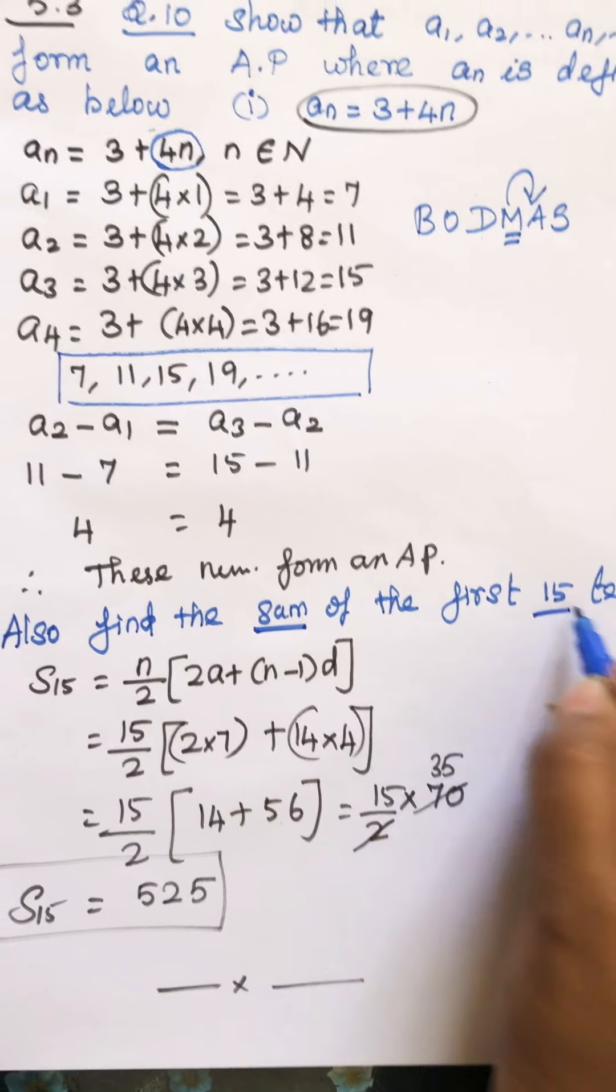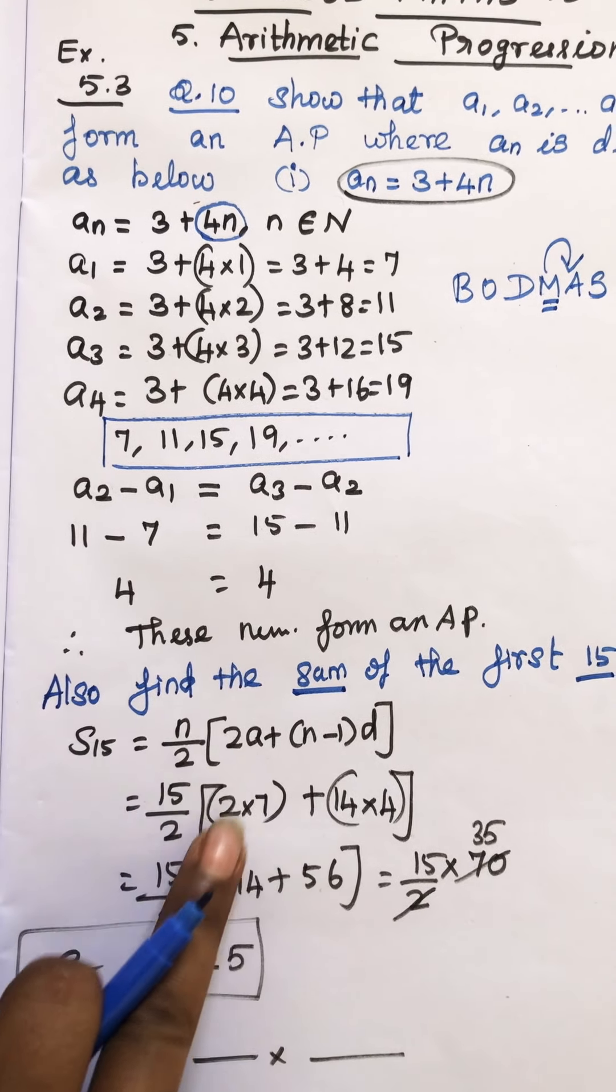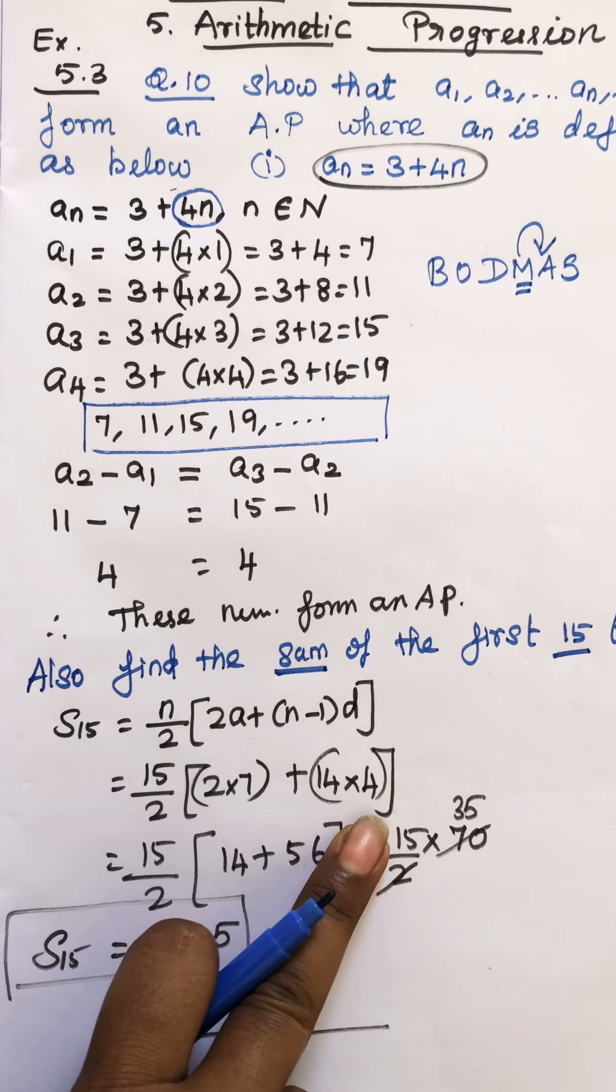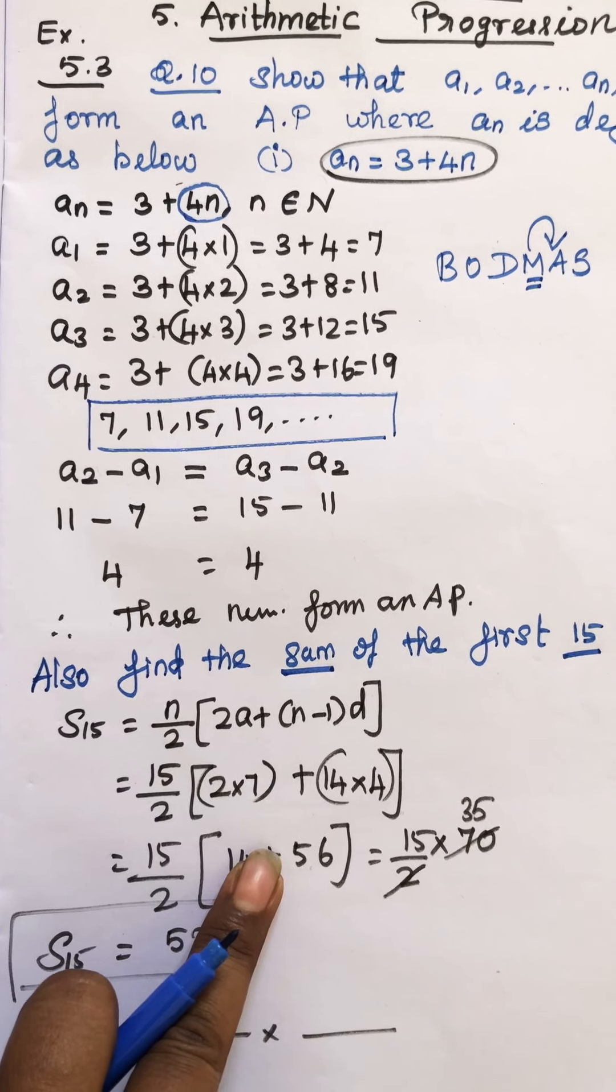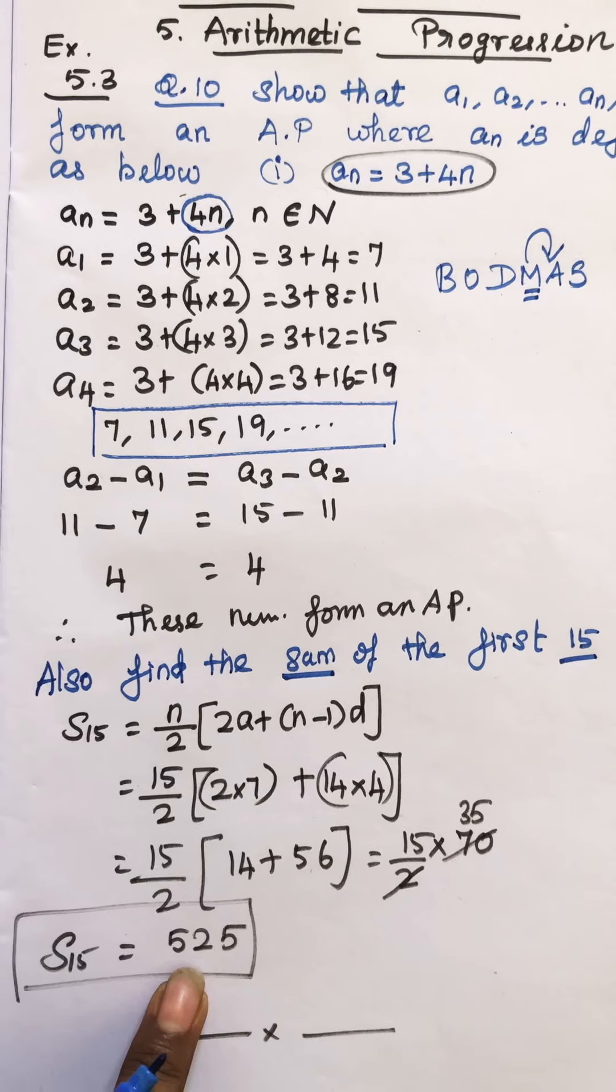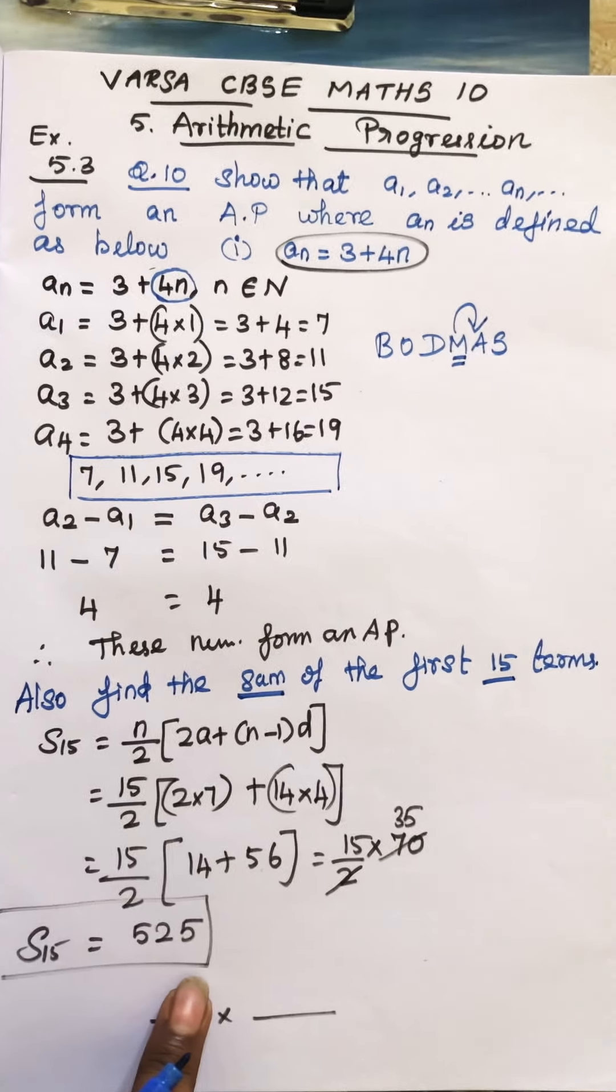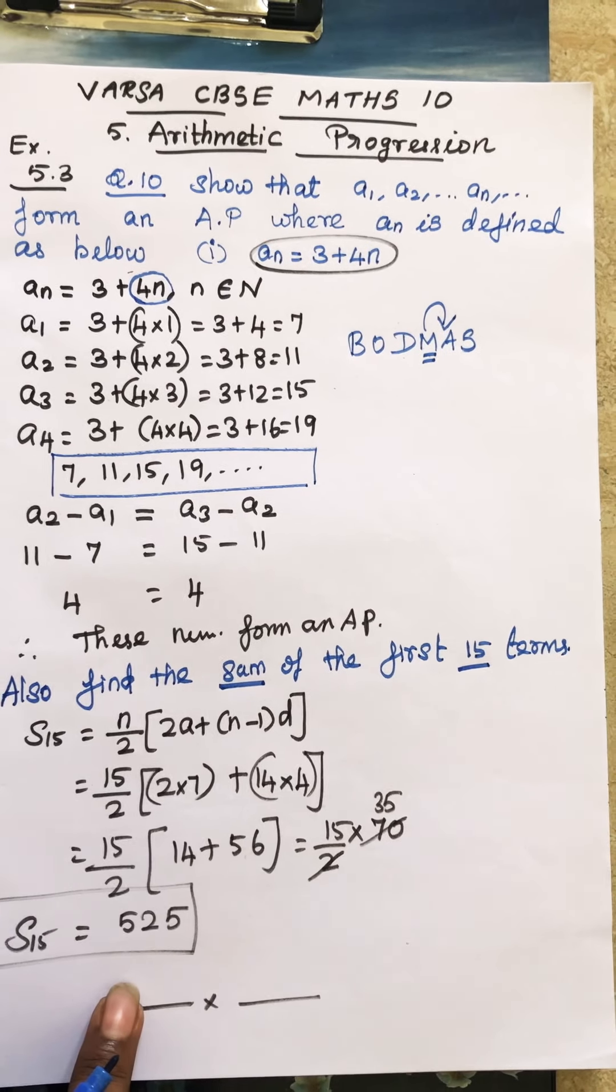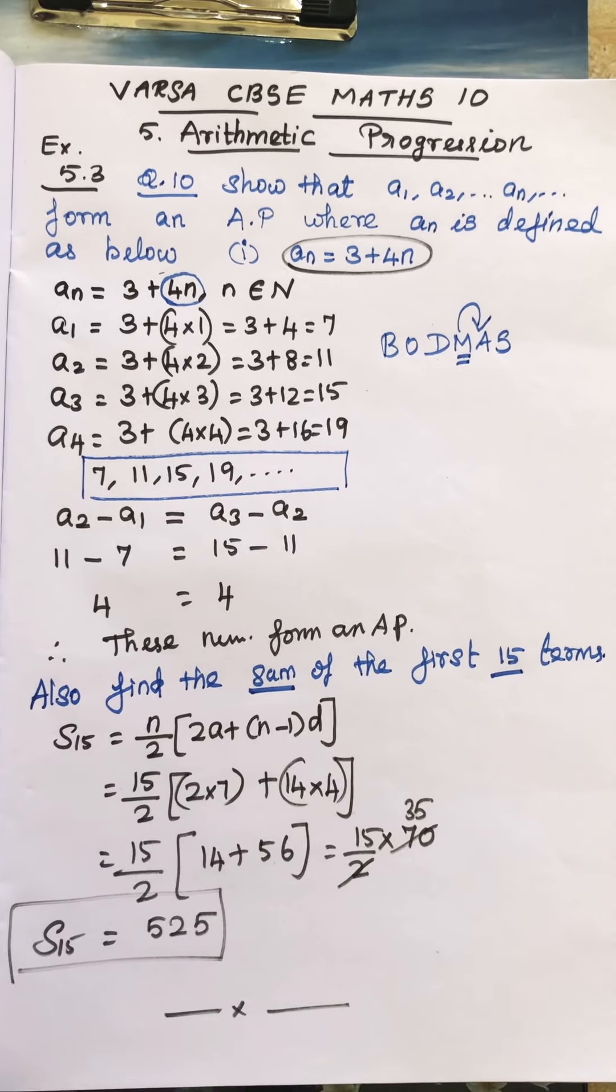And they want to find the sum of the 15 terms. So simple, you have formula: n is 15, a is 7, d is 4. That is all, you substitute all the elements. Variables you substitute and you find the answer 525. This is your final answer. Student, do you understand? I hope you all understand this sum. So please like and subscribe students. Thank you.